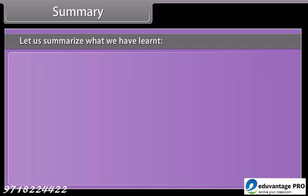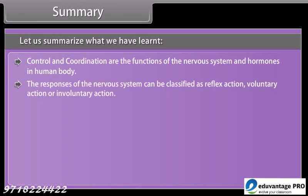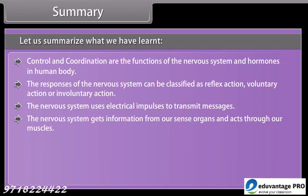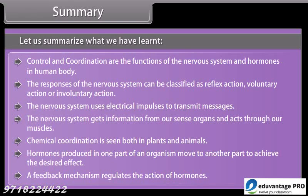Control and coordination are the functions of the nervous system and hormones in the human body. The responses of the nervous system can be classified as reflex action, voluntary action, or involuntary action. The nervous system uses electrical impulses to transmit messages and gets information from our sense organs, acting through our muscles. Chemical coordination is seen both in plants and animals. Hormones produced in one part of an organism move to another part to achieve the desired effect, and a feedback mechanism regulates the action of hormones.